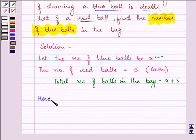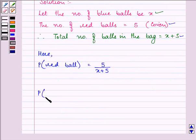Now let us find out the probability of a red ball. That will be equal to number of red balls divided by total number of balls in the bag. That is five upon x plus five. And probability of picking up a blue ball will be equal to number of blue balls, that is x, divided by the total balls in the bag, that is x plus five.